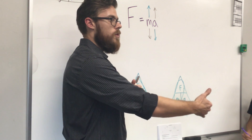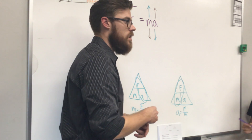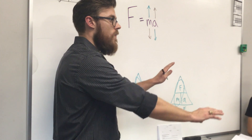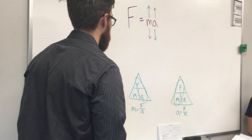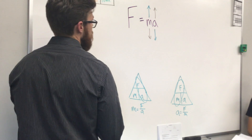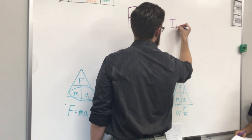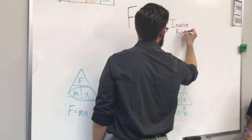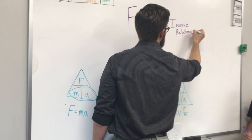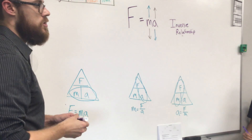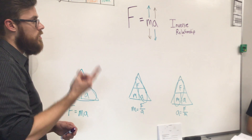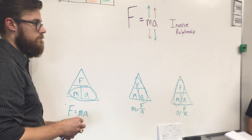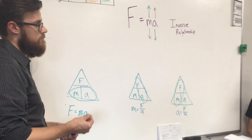The lighter object accelerates more with the same force. It's like pushing someone: if you push a small person and a large person with the same force, it has a bigger effect on the smaller person. We call this an inverse relationship — one goes up, the other goes down. This is the opposite of a direct relationship, where both go up or both go down.